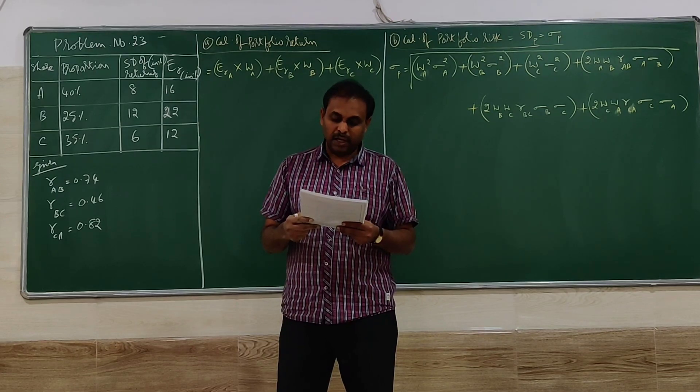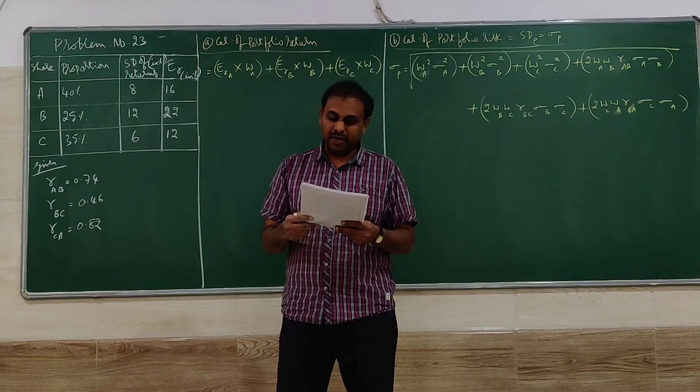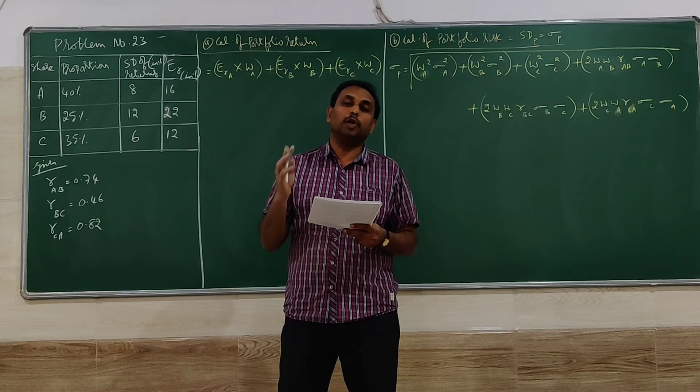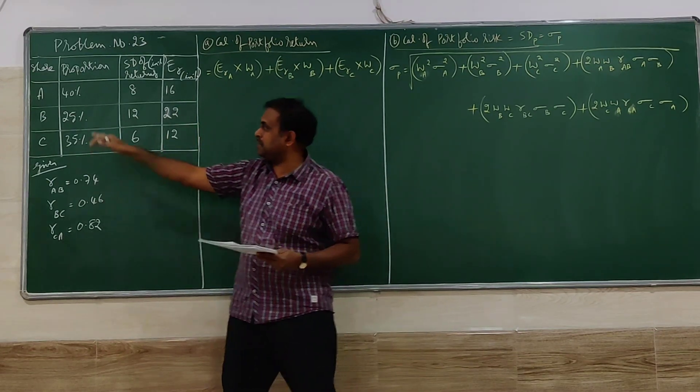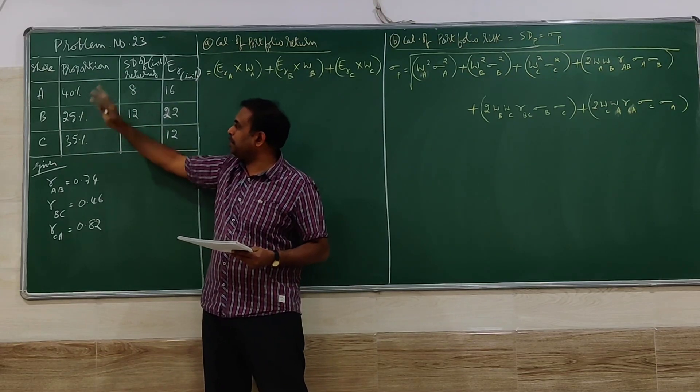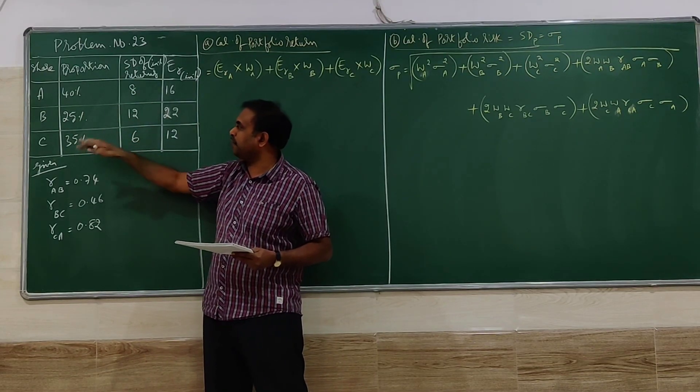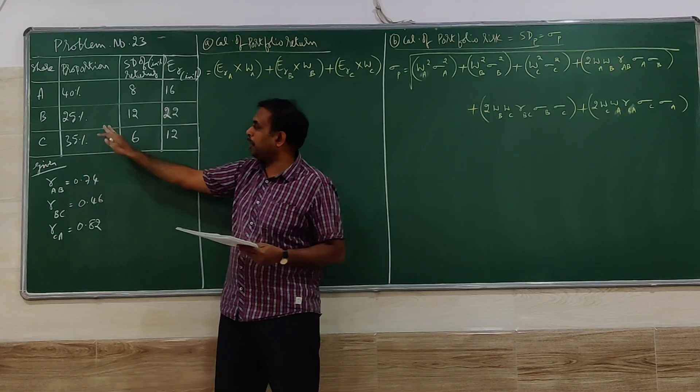You are required to calculate the expected rate of return and standard deviation of the portfolio. This portfolio consists of three different shares A, B, C with proportions of 40%, 25%, and 35%. If you add the proportions, it should be 100%. You have to ensure that.